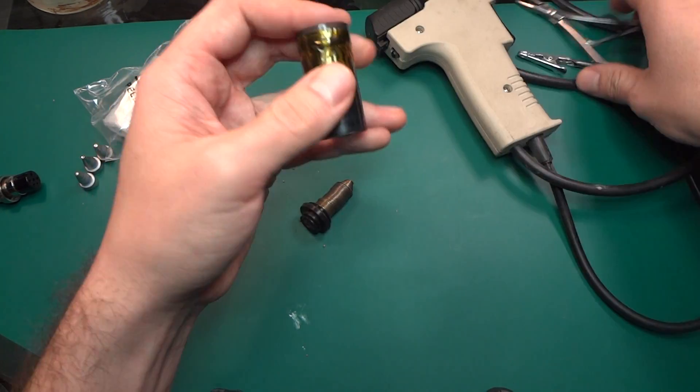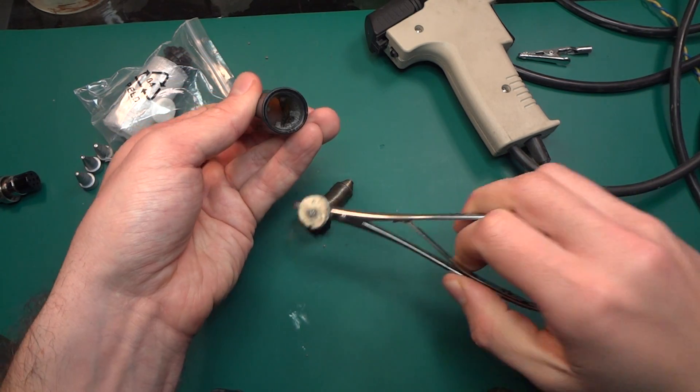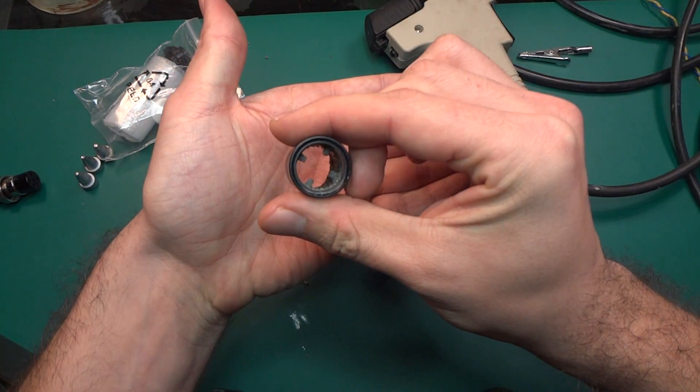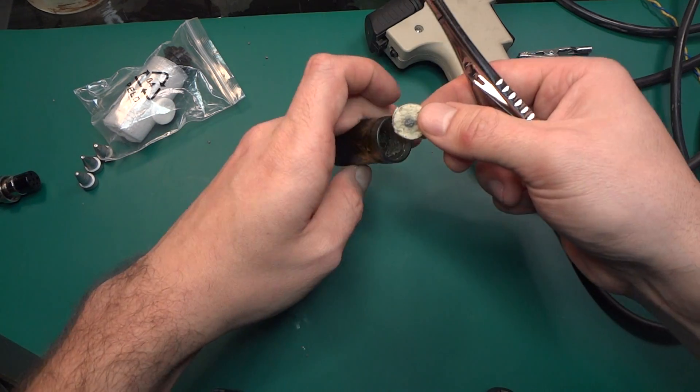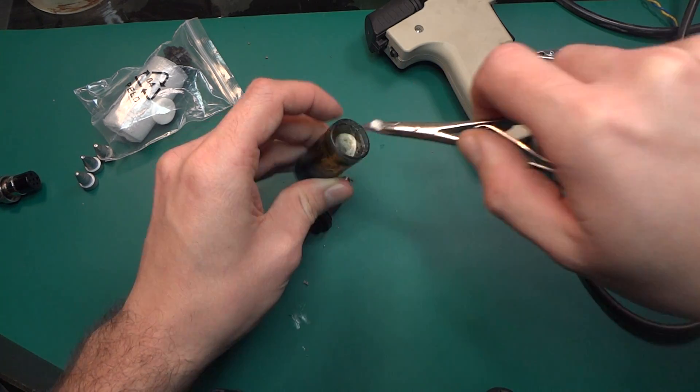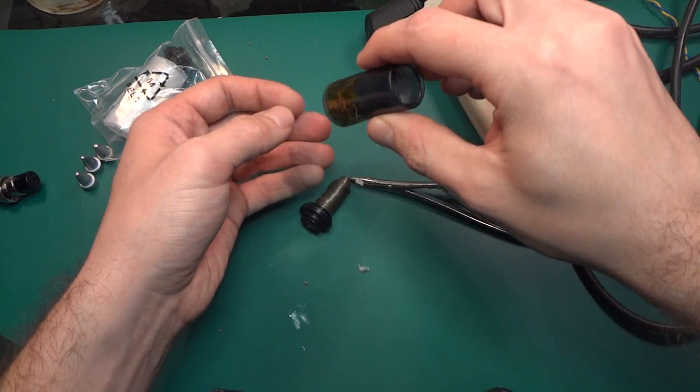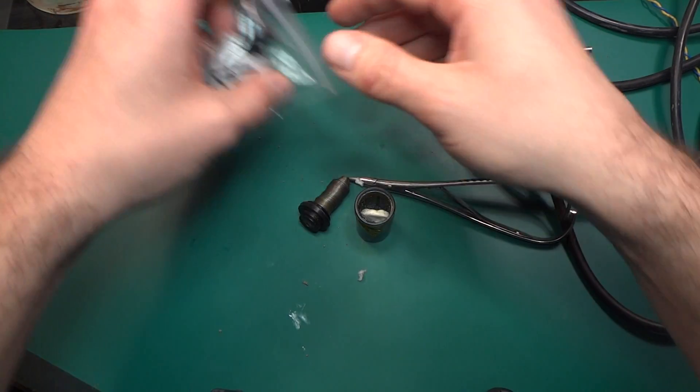And basically first of all you can't clean this through-hole. You can't because there is this plastic thing inside. You can't basically grab a cotton pad and just swipe inside because it's going to start melting. So cleaning this one from flux is not nice.